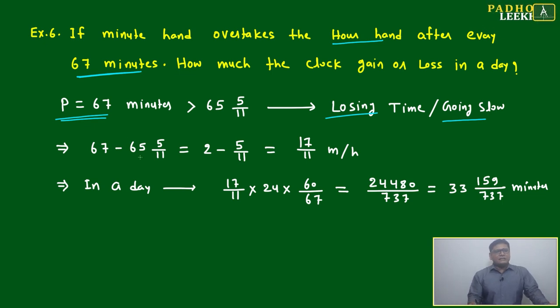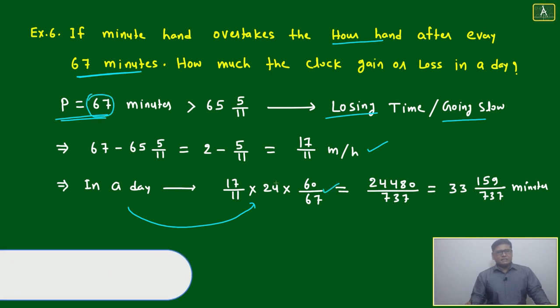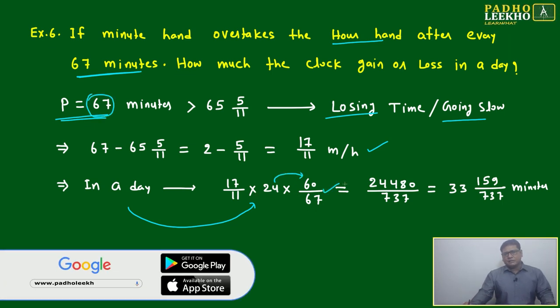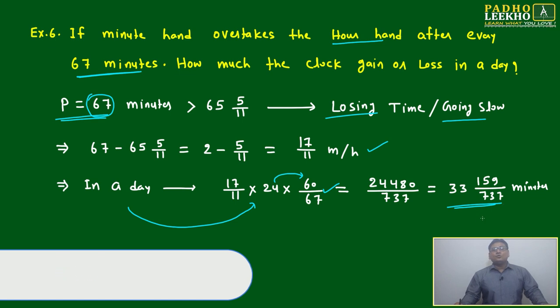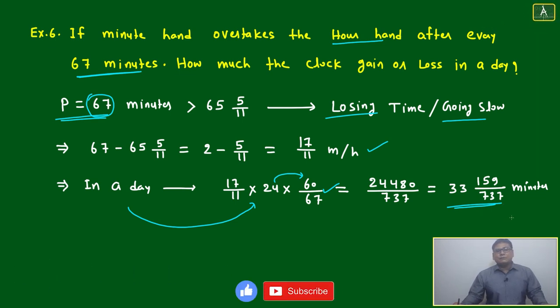67 minus 65 into 5 by 11, it will be 17 by 11 minutes per hour. In a day, just multiply by 24 hours. 60 by 67 - why are we doing like this? 60 is converted to minutes, nothing else. 24 into 60 divided by 67, we will get 33 minutes into 159 by 737 minutes. We are losing in one day.